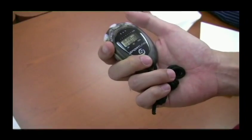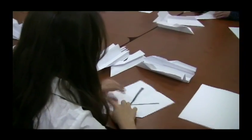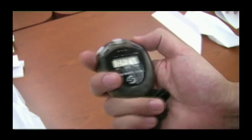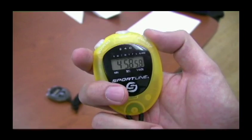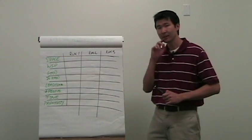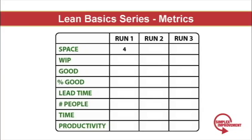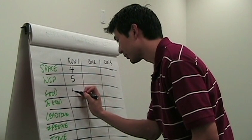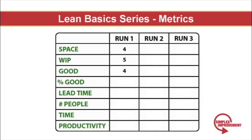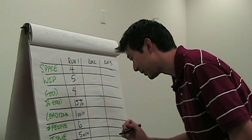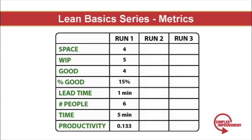In this simulation and the two to come, I write an X on a blank sheet of paper and start a separate timer to see how long it takes to produce my special order. I allow them to continue to build for five minutes before I stop this portion. Let's review the metrics on the first run: we used four tables, there were five in work in process, they only produced four good planes, and only 15% were good. The lead time for the x-plane was one minute, there were six people producing, the time was five minutes, and their productivity — good parts divided by people divided by time — was 0.133.